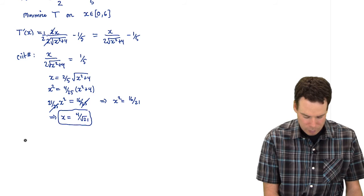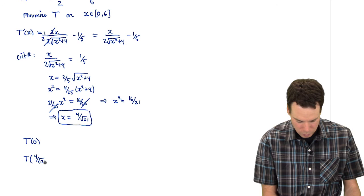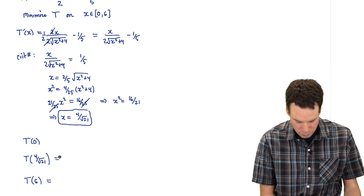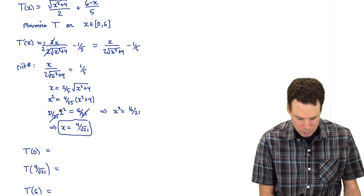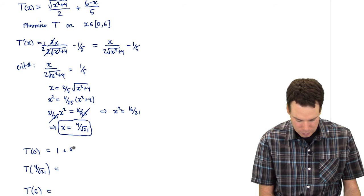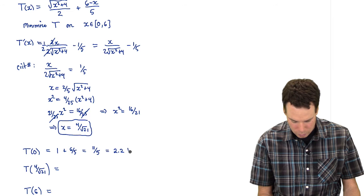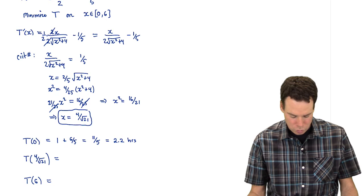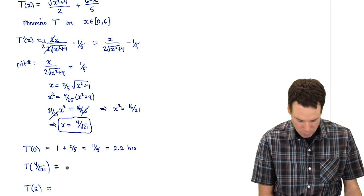Now we go ahead and compare our value of our function at our endpoints and the critical number. So we work out T of 0, we work out T of 4 over root 21, and we work out T of 6. And we see which one is smallest. What's T of 0? So I'm just going to scroll down a bit so we can see the function still. T of 0 is root 4 over 2 so that's 1 plus 6 fifths. Or in other words, it's 11 fifths or 2.2 hours. So 2.2 hours if she heads straight to the shoreline and then runs the 6 kilometers down the shoreline.